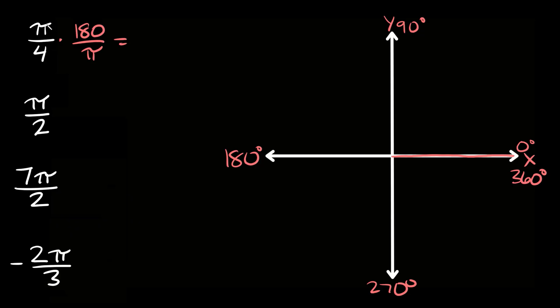So you can see on top and the bottom we have a π so those cancel out. So we're simply left with 180 over 4 which is equal to 45 in our units, our degrees.